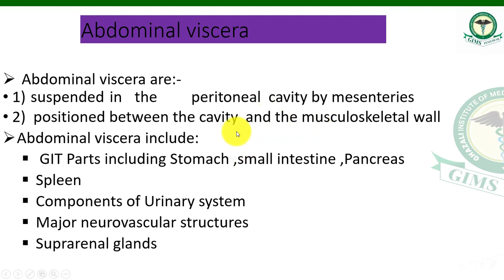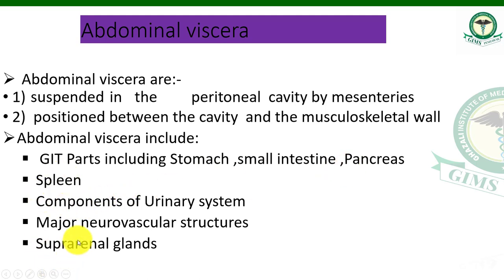The organs included in abdominal viscera are the GIT — gastro-intestinal tract — which includes the stomach, small intestine, pancreas, large intestine, and spleen. There are also accessory organs: the spleen, liver, pancreas, and gallbladder — these are all attached as components of the digestive system.